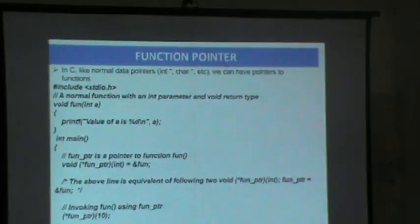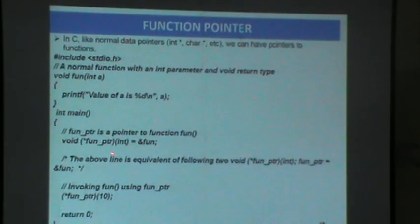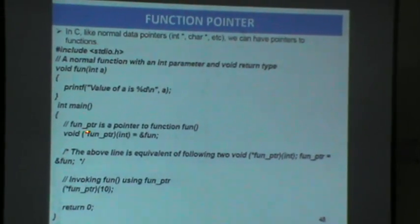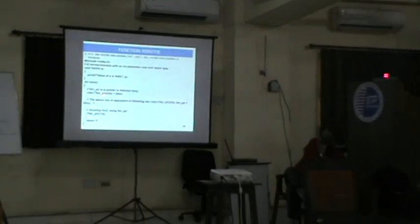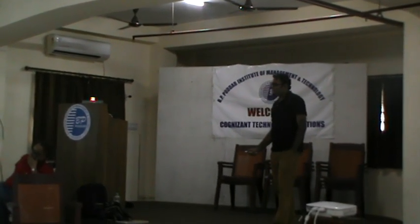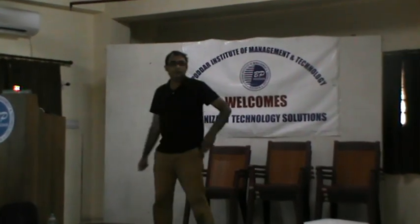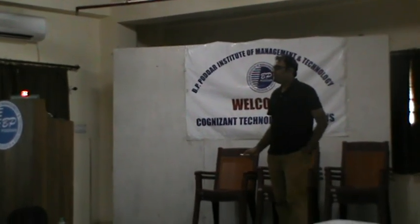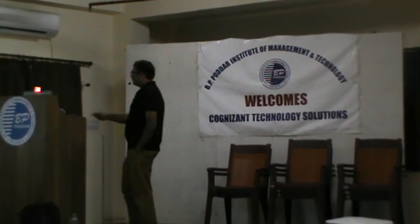Function pointer: functions can also be used as pointers. We declare a function, and using a syntax like int star function_pointer, we can point to a function. If we add brackets around the star and name, it becomes a function pointer. Without the bracket it declares a function that returns a pointer. A function pointer stores the starting address of a function, not data. Function pointers are somewhat difficult to understand from slides; the theory is important here.